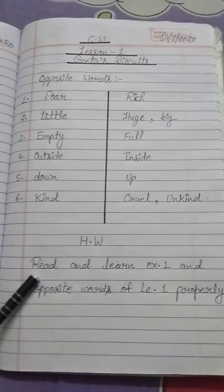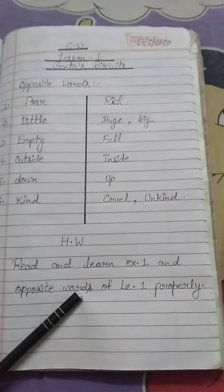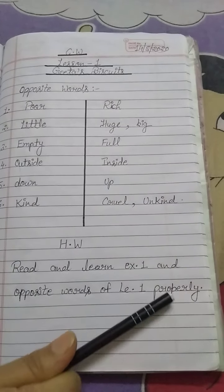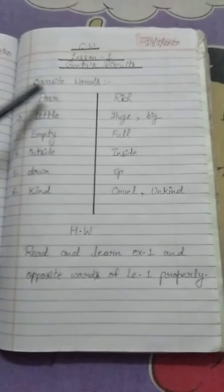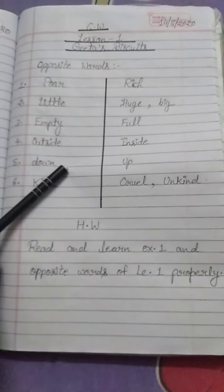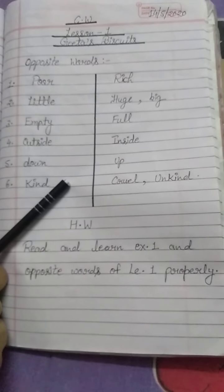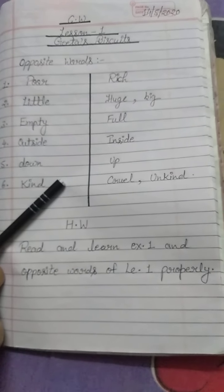Now it is your homework. Read and learn exercise one and the opposite words of lesson number 1 properly. In the evening you will learn them. After that you will be ready for tomorrow. Understand?